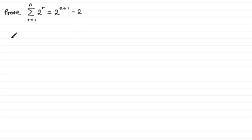In the usual way, what we do is try and prove that it's true for when n equals 1, and then we assume it's true for n equals k, and go on to prove that on that basis it's true for n equals k plus 1. And then if true for n equals 1, it must be true for n equals 2, 3, 4, and therefore all positive integers.